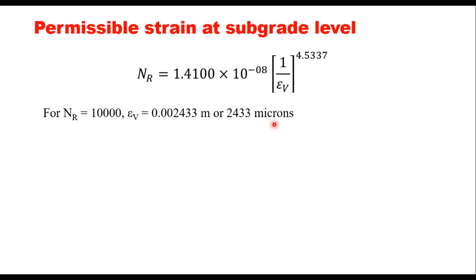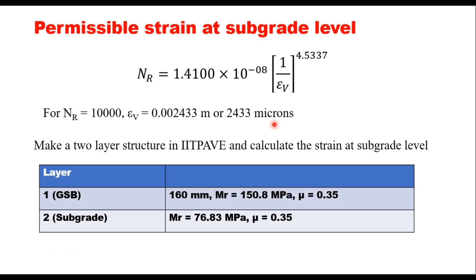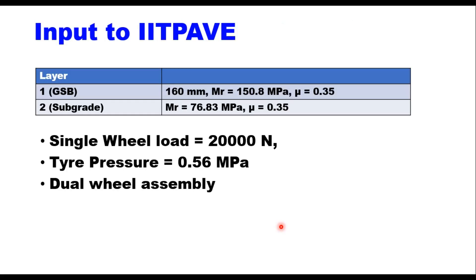So you model this structure now as a two-layer structure in IITPAVE. The top layer will be GSB with this property: 160 millimeter thickness, Mr value 150.8 as we calculated, mu 0.35; subgrade Mr value 76.83 corresponding to 10 percent CBR and mu is 0.35. And other parameters will be single wheel load of 20,000 Newton, tire pressure 0.56 MPa, and dual wheel assembly. So you model it in the IITPAVE. Let us move to IITPAVE now and let us see what is the strain at the level of subgrade.